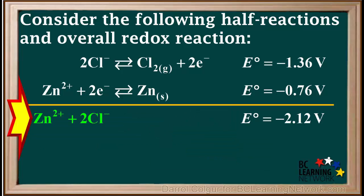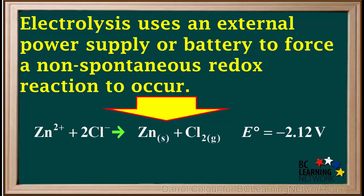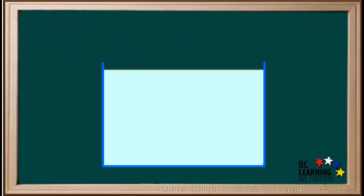But we can force this reaction to occur using a process called electrolysis. Electrolysis uses an external power supply or battery to force a non-spontaneous redox reaction to occur. Electrolysis takes place in an electrolytic cell. We'll look at the simplest type of electrolytic cell.